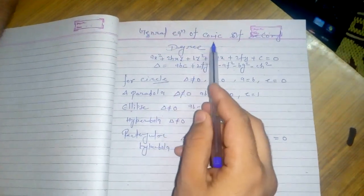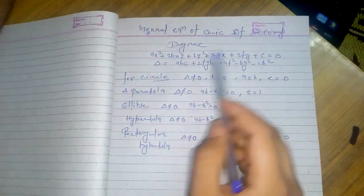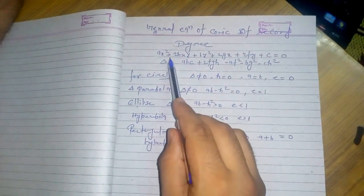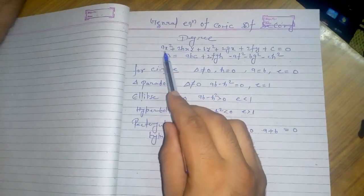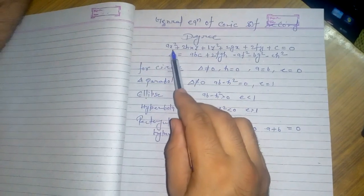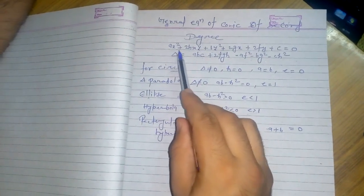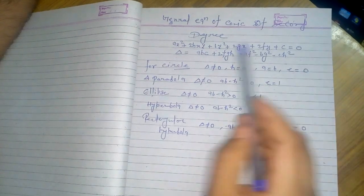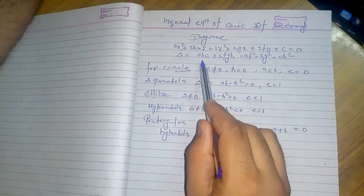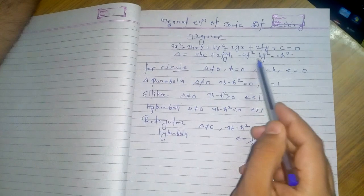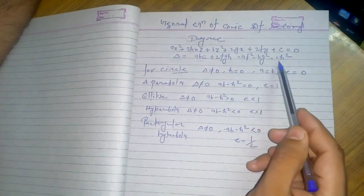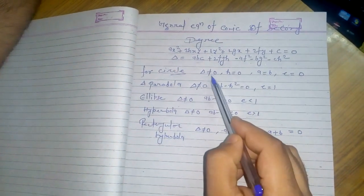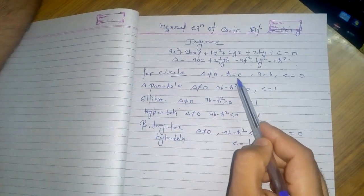Hello guys, today we will solve the general equation of a conic section of second order degree. The general second-order conic equation can be written as ax² + 2hxy + by² + 2gx + 2fy + c = 0. The discriminant is abc + 2fgh − af² − bg² − ch². For a circle, this discriminant should not be equal to 0, h = 0, and a = b, with eccentricity equal to 0.